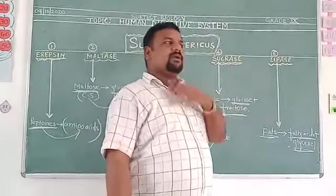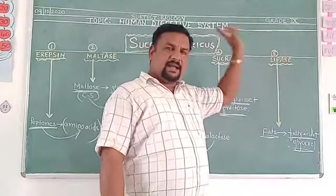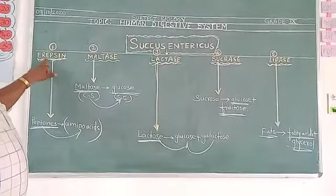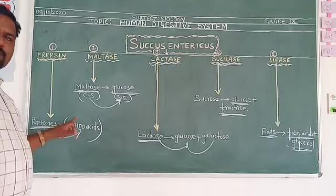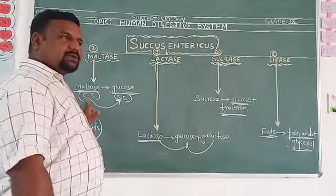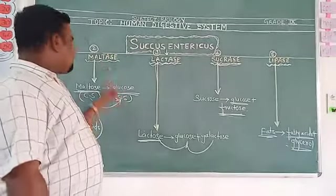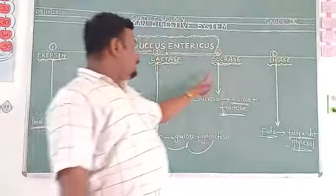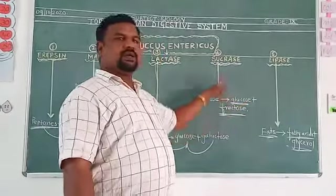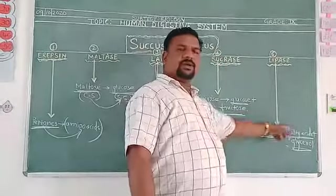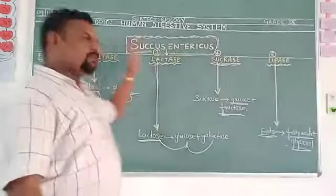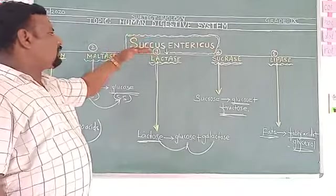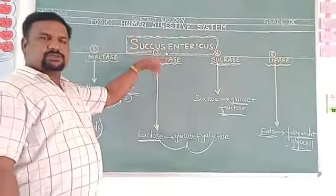The fat molecule is a very complex one. Initially, bile is responsible for the emulsification of fats, breaking them into smaller droplets. Then the five enzymes of succus entericus complete digestion: maltase converts maltose into simple sugar; lactase converts lactose into glucose and galactose; sucrase converts sucrose into glucose and fructose; and lipase converts fats into fatty acids and glycerol.